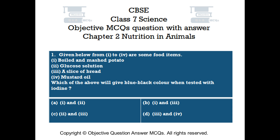Question number 1. Given below from 1 to 4 are some food items: 1. Boiled and mashed potato, 2. Glucose solution, 3. A slice of bread, 4. Mustard oil. Which of the above will give blue-black color when tested with iodine?